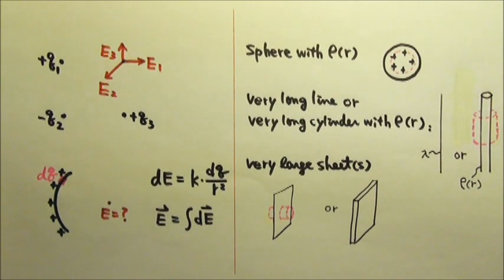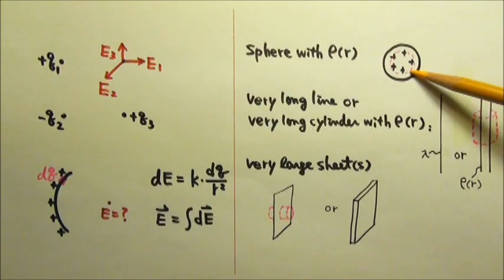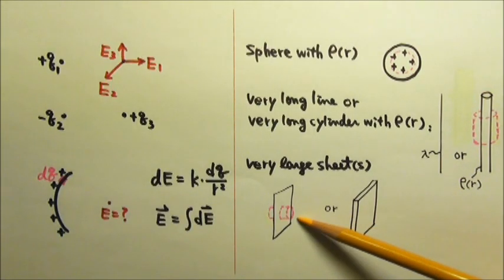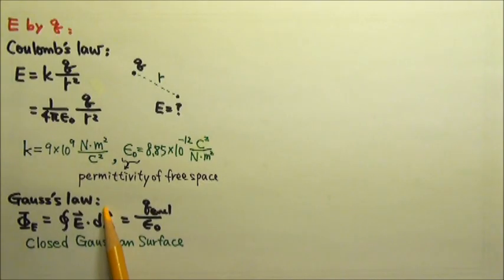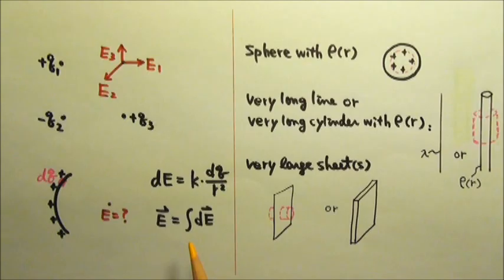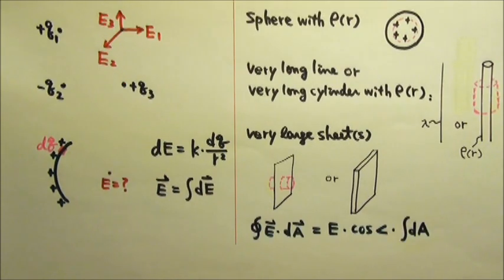When we use Gauss's law, we have to choose appropriate imaginary closed Gaussian surface for our integral. We are not interested in using Gauss's law if it involves complicated integration, because Coulomb's law will be easier for that. We use Gauss's law only when there is enough symmetry.